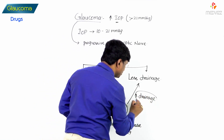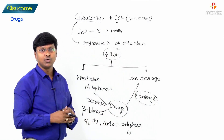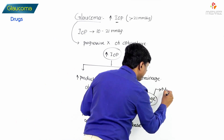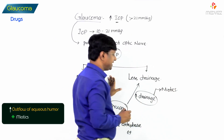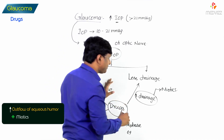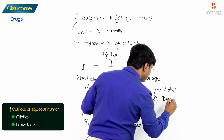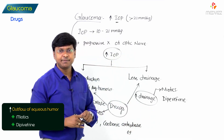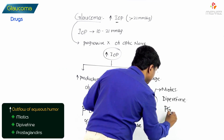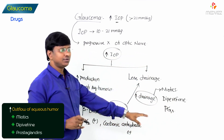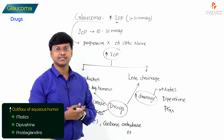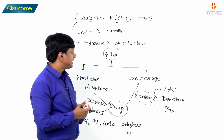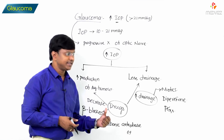Now the group of drugs which will increase the outflow of the aqueous humor: we have miotics, which will increase the drainage; then we have another important drug called dipivefrin; and the other drugs are the prostaglandins. So miotics, dipivefrin, and prostaglandins — they will increase the drainage by increasing the outflow.